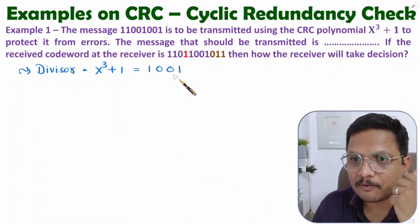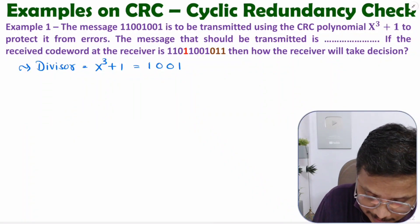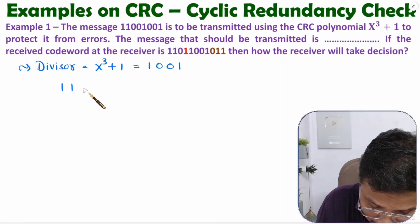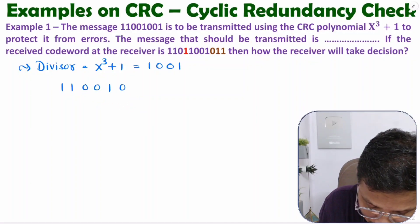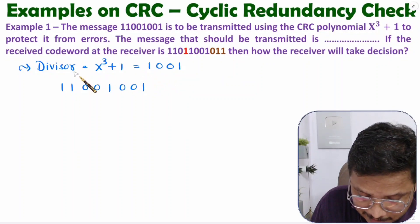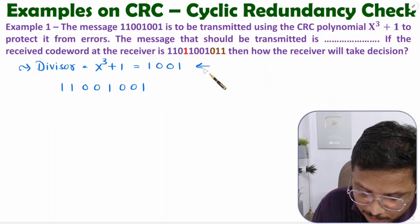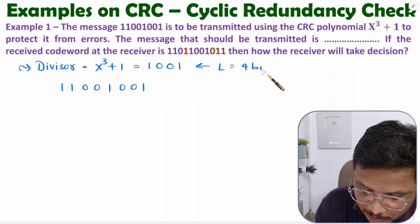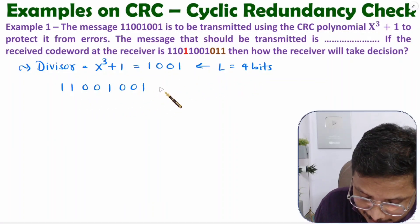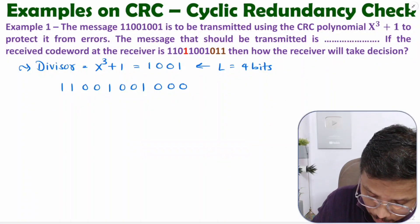Once you have the divisor in binary form, the calculation is straightforward. Write the message signal: 1 1 0 0 1 0 0 1. Now we need to add redundancy bits. The divisor has 4 bits, so we need to add 3 redundancy bits. I'll be adding 0 0 0 as redundancy. Before you go for division, draw one straight line here — students often make mistakes when solving without this line.